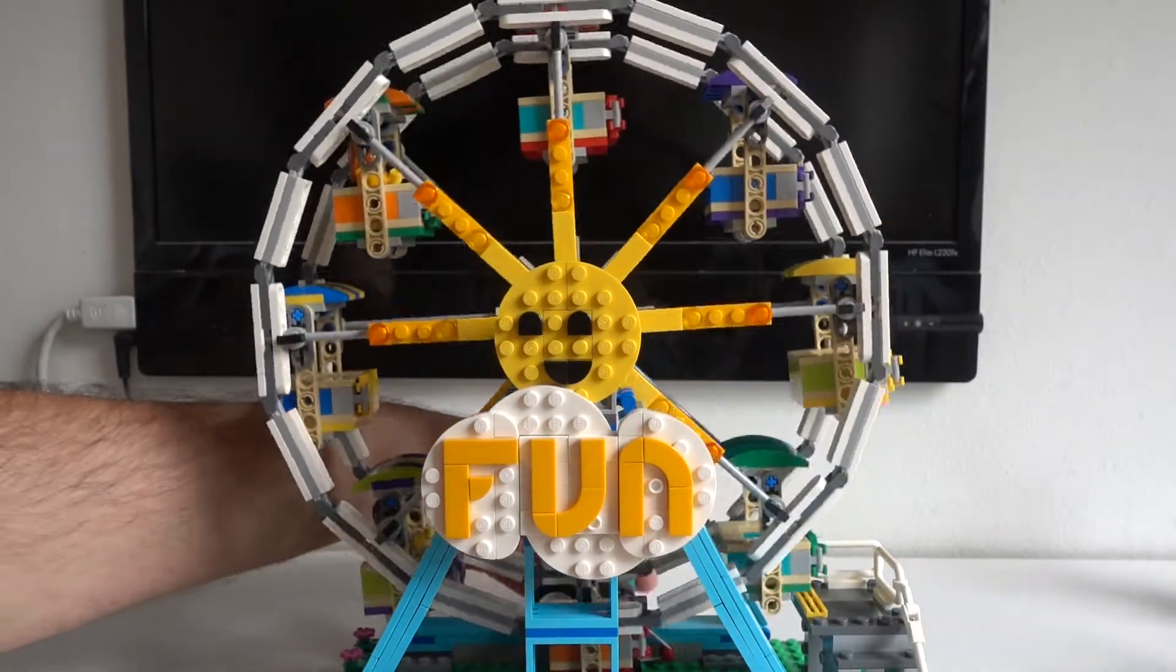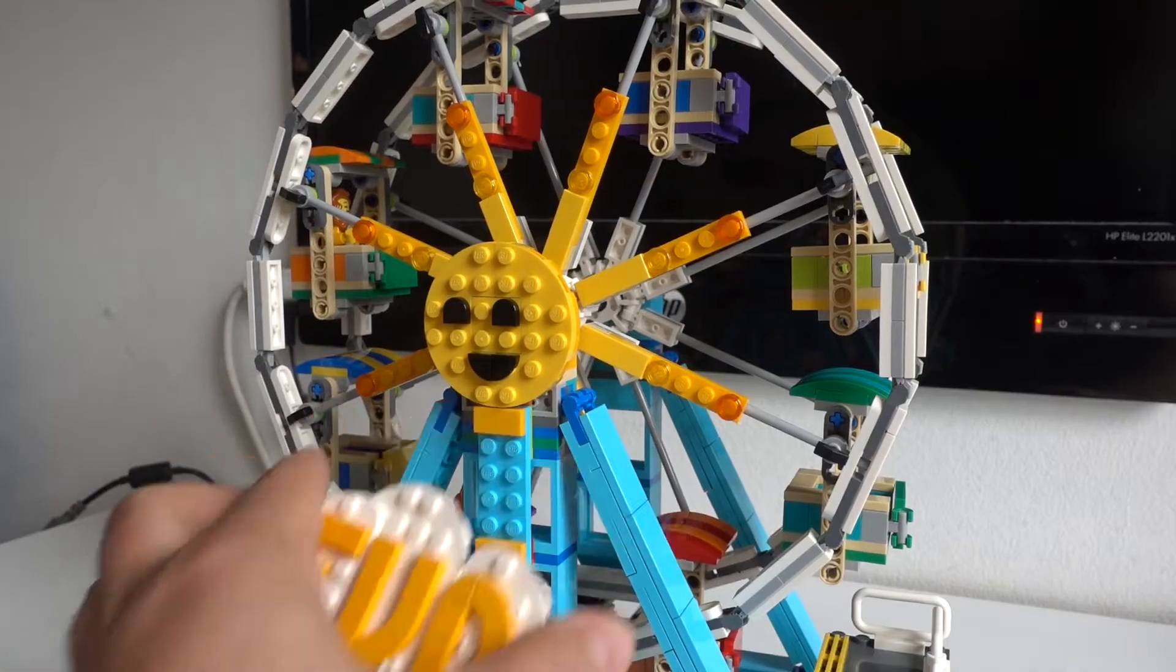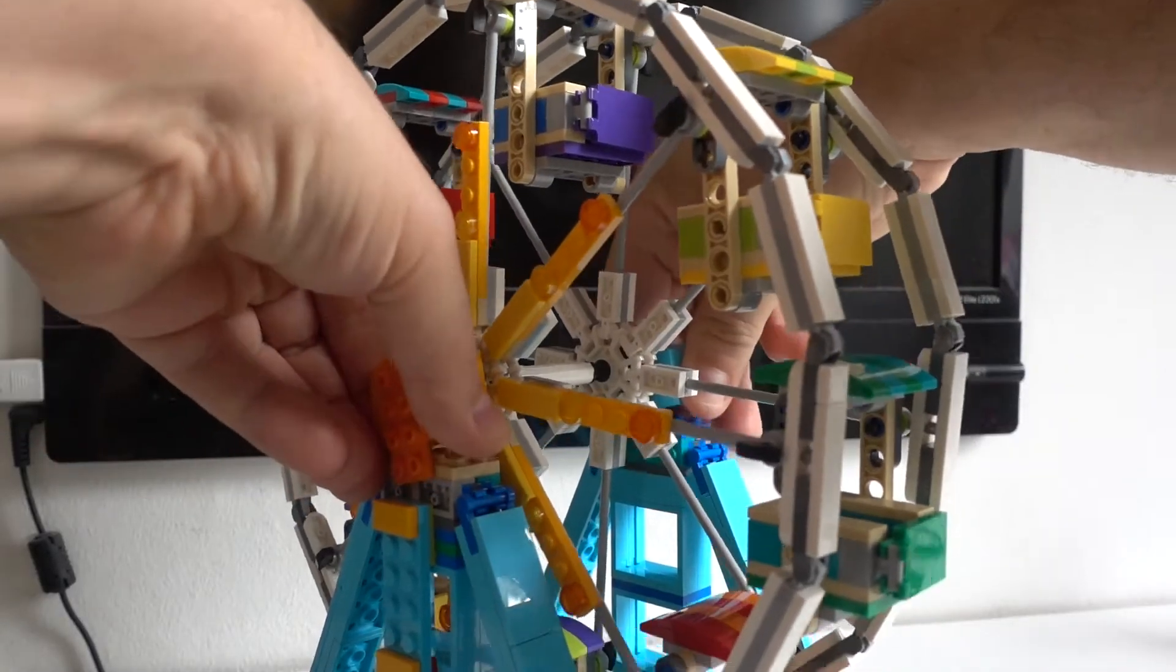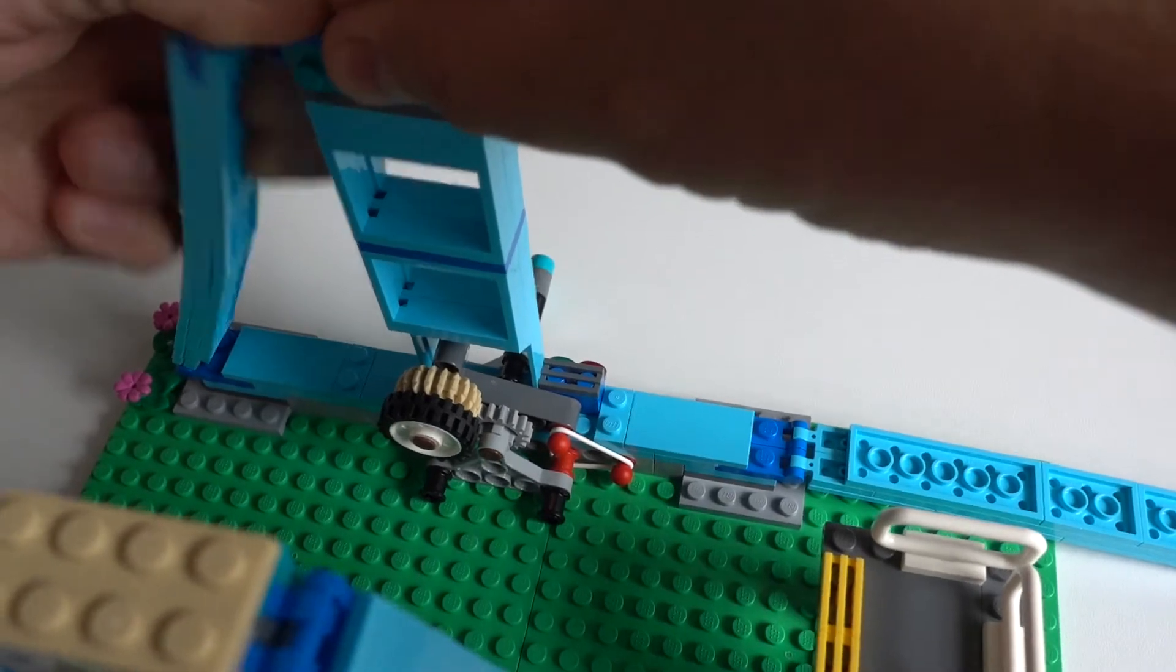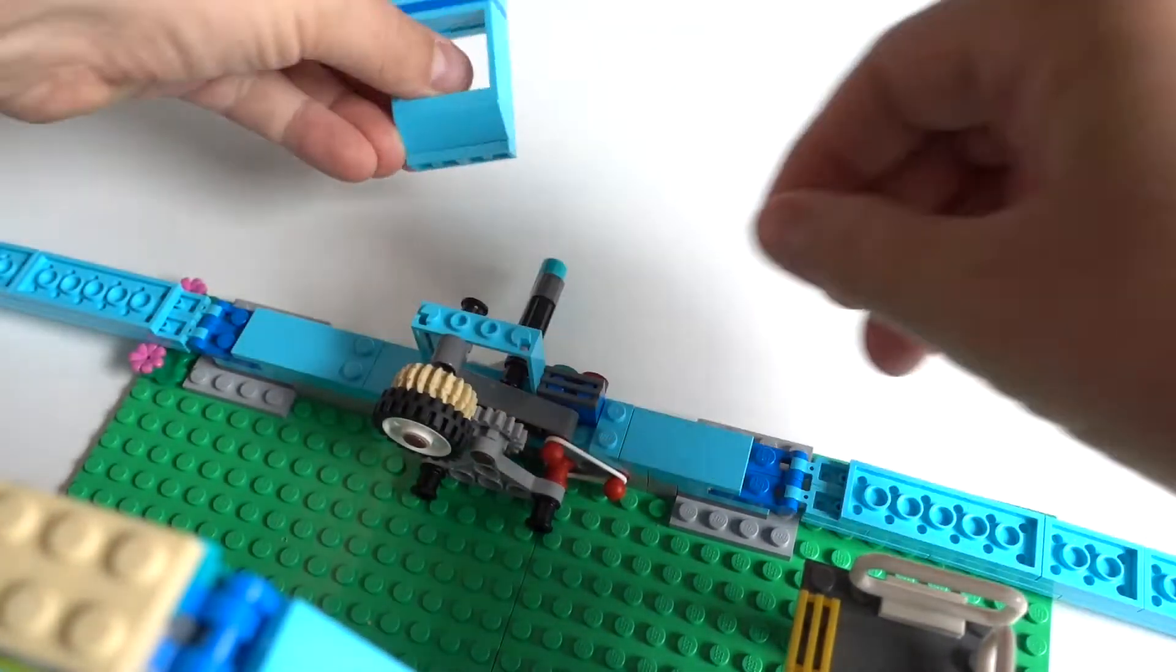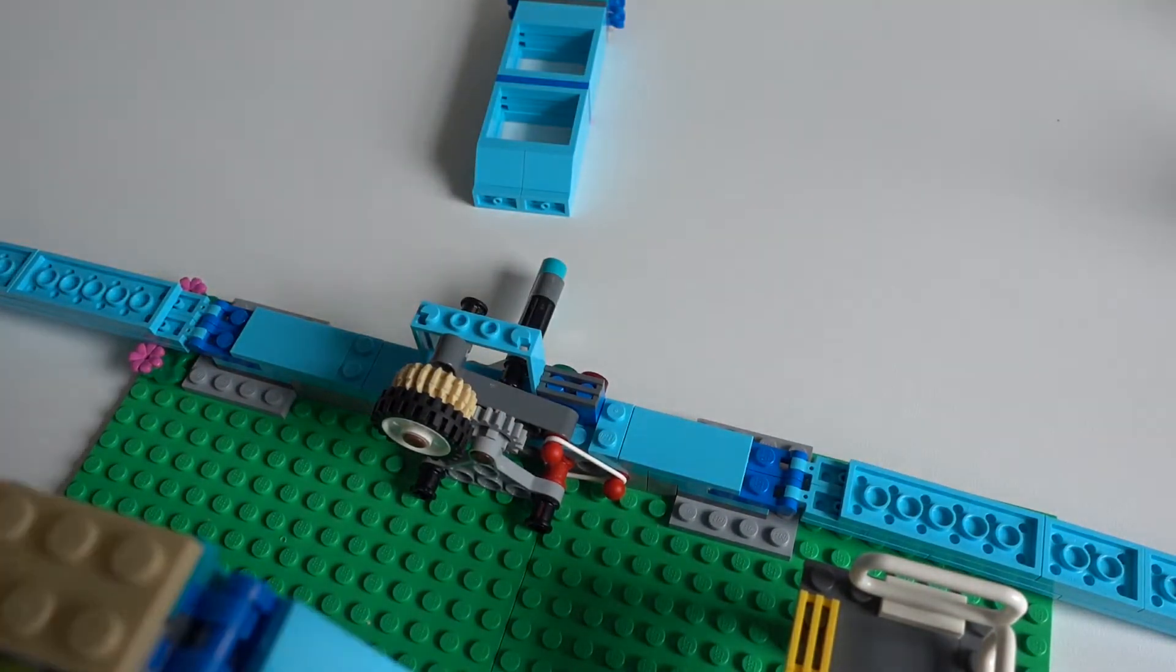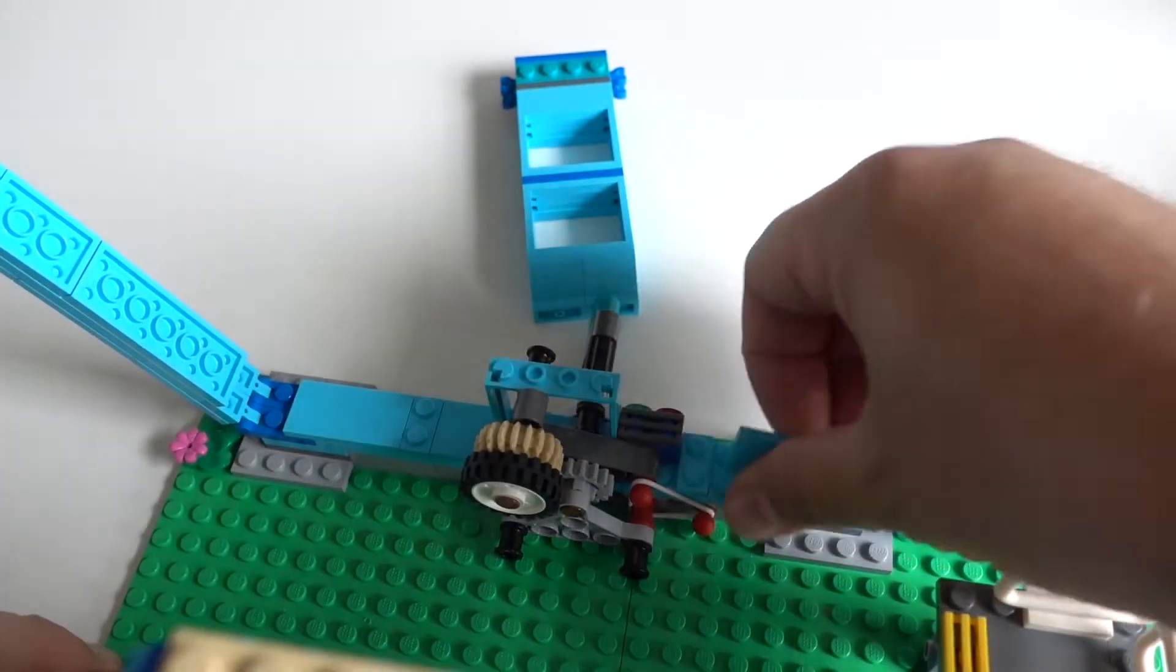And now to the motorization. Remove the fun and the sun again and the wheel again. Detach the diagonal support in the back again and remove the vertical support in the back again. And then remove the 2x4 tile.